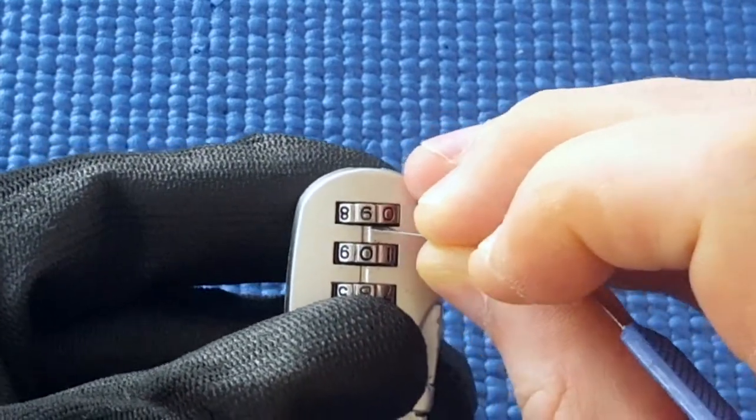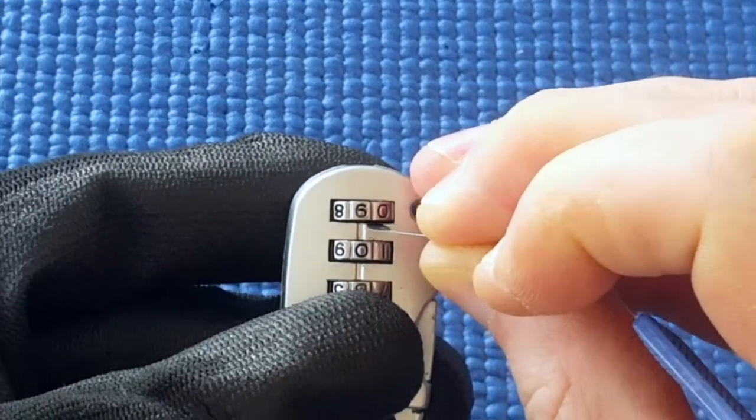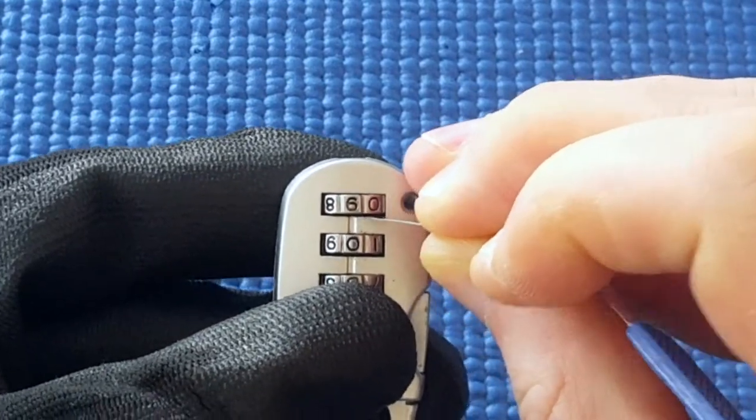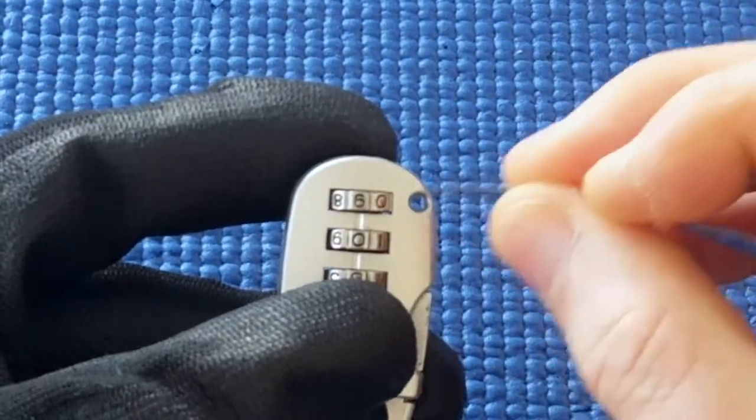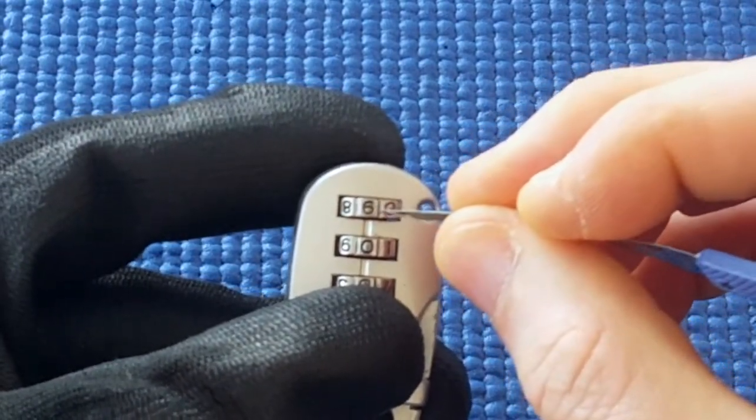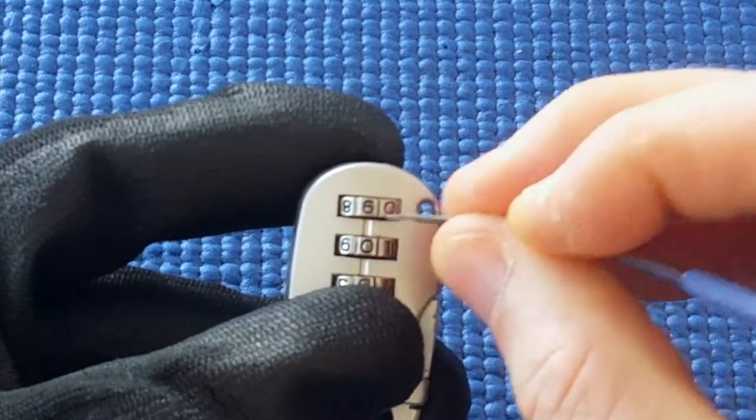Now interestingly, on nine, I don't feel a bump. And that's the exact opposite of what the correct number was, four. Four, because it's a ten-digit wheel, four plus five is nine.